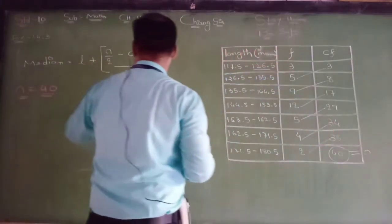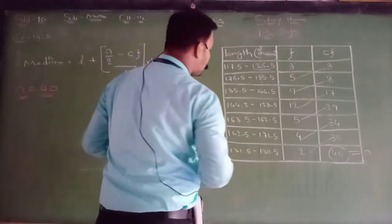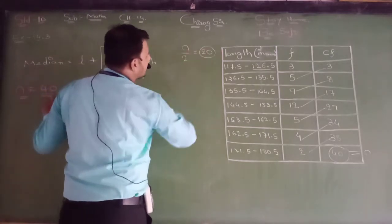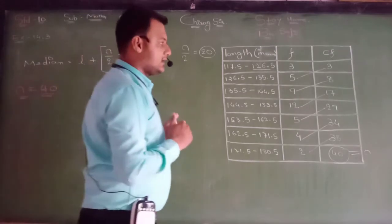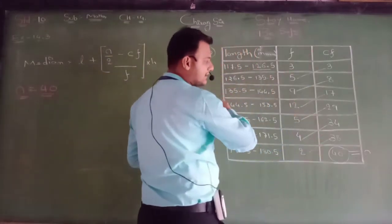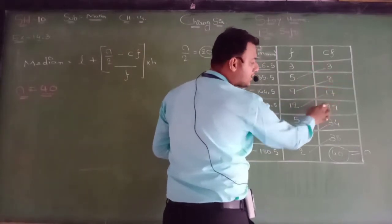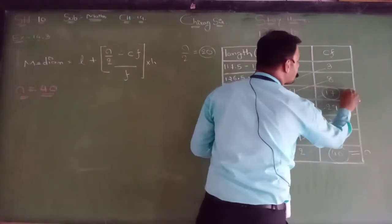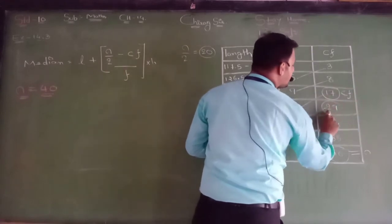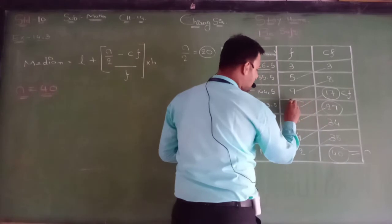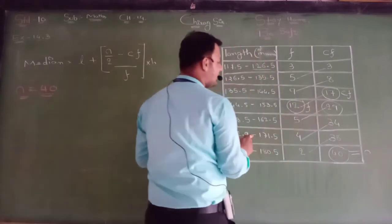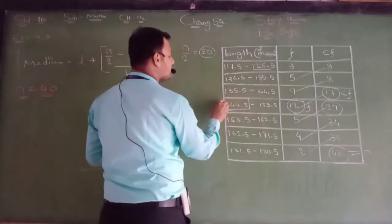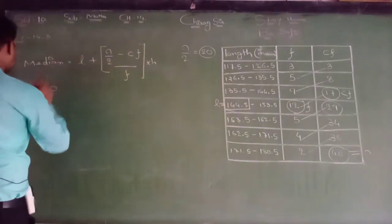Next, N by 2, that is 20. N by 2 is 20. Now 20 lies in the cumulative frequency...